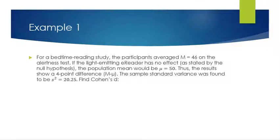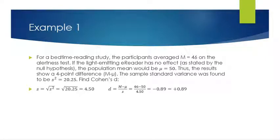For a bedtime reading study, participants averaged m equals 46 on an alertness scale. If the light-emitting e-reader has no effect, as stated by the null hypothesis, the population mean would be 50 — a four-point difference. The sample variance was s squared equals 20.25. To find Cohen's d, we need s, which is the square root of s squared, giving s equals 4.5. Then d equals 46 minus 50 over 4.5, giving negative 0.89. In Cohen's d, you always change the answer to positive, so d equals 0.89.